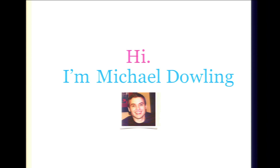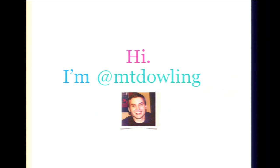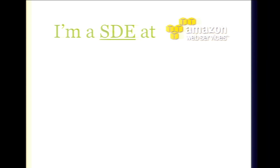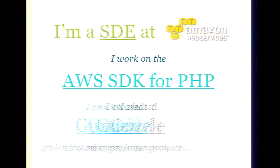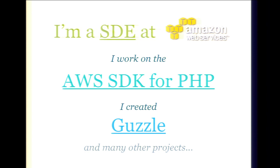My name is Michael Dowling. Since we're at a conference where nobody knows people's names, only Twitter handles, I'm mtdowling on Twitter. I'm a software development engineer at Amazon Web Services — I program stuff. I work on the AWS SDK for PHP, which allows PHP developers to connect to Amazon Web Services like EC2 and S3 in an idiomatic way. Beyond direct API access, we also provide abstractions, like a stream wrapper for Amazon S3 so you can upload files as if they were on disk. And when I'm not working, I work on open source projects like Guzzle, which is why we're all here today.